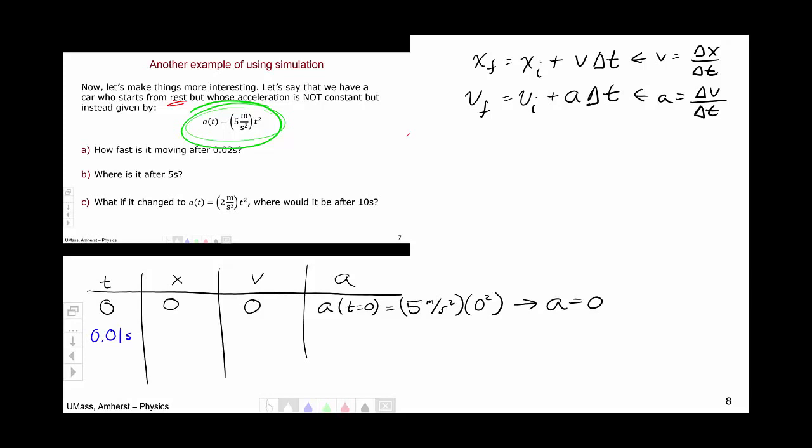So let's start with position this time. We start with position here. That's going to be xi which is zero, plus v which is zero, and delta t, well it's 0.01, but that doesn't really matter. So the whole thing is going to be zero. So our position is going to be zero.